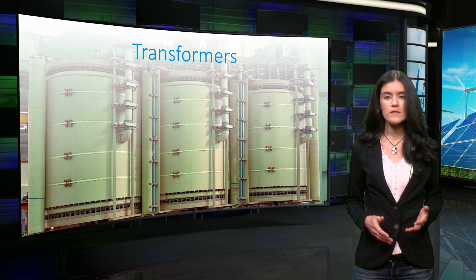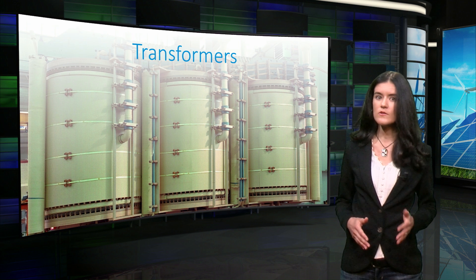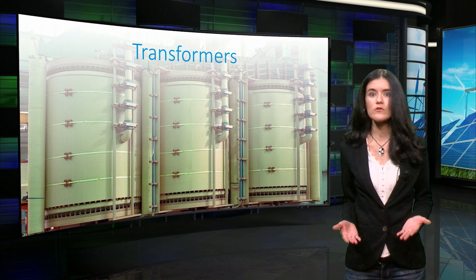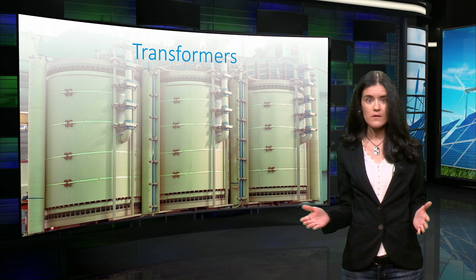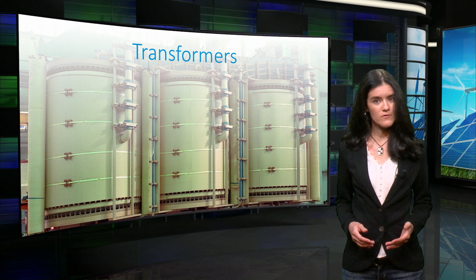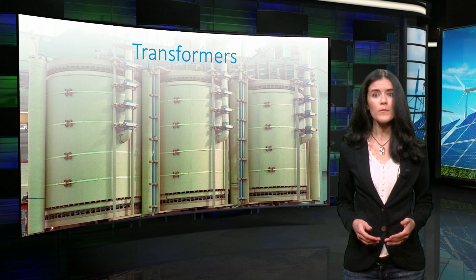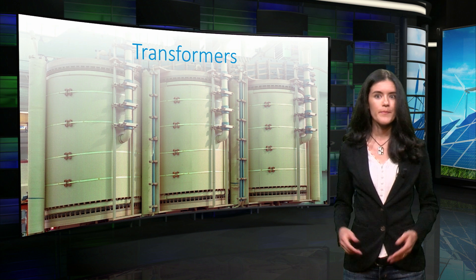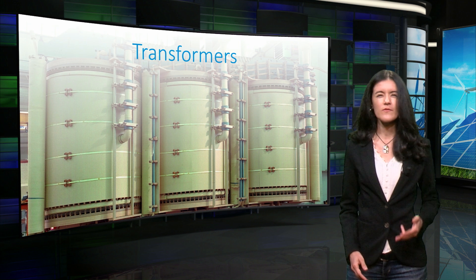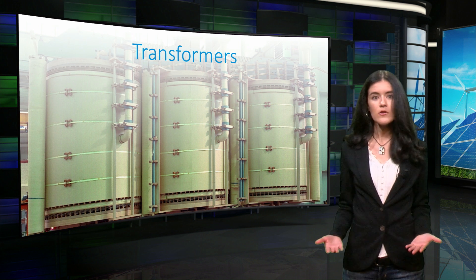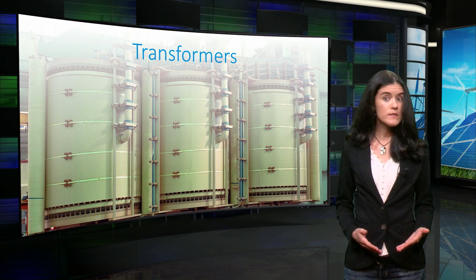The voltage levels of the transmission system are higher than those of the distribution system. You might wonder, how does the voltage level change from one system to the other? In power systems, this is done mainly by means of transformers. A transformer uses electromagnetic induction to transfer electrical energy between two or more circuits. A typical transformer consists of two windings. Depending on the ratio between the primary and the secondary winding, the voltage will be increased or decreased.